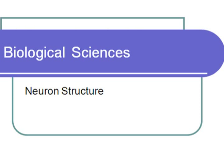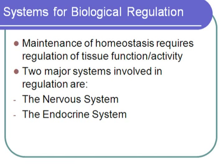Welcome to another edition of MCAT Strategy. Today we will be doing a biological sciences mini-lecture on neuron structure. Before we get into neuron structure, I will be discussing some background on biological regulation. Maintenance of homeostasis requires tight regulation of tissue function and activity. Two major systems involved in regulation are the nervous system and the endocrine system, and the nervous system will be our focus for this lecture series.